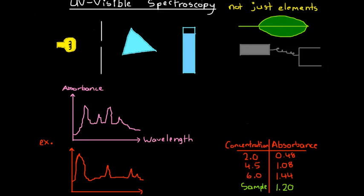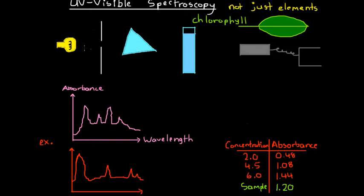UV visible spectroscopy is very similar to atomic absorption spectroscopy. However, it deals more with this idea of the colour that things are and how we can analyse that more technically. The first step when we're trying to analyse something using UV visible spectroscopy is to identify the pure substance we're testing. Let's say we're trying to find out the content of chlorophyll in a given piece of plant matter — chlorophyll being the stuff in plants that makes them look green.